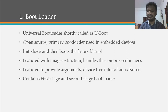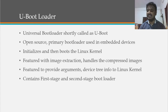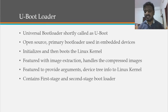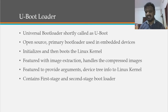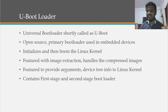U-Boot initializes the DDR RAM and peripherals like MMC, eMMC, and storage, then boots the Linux kernel. Since embedded systems have limited memory space, the image is compressed and flashed into memory. U-Boot extracts and handles that image, and provides kernel arguments so the system behaves correctly for different platforms.